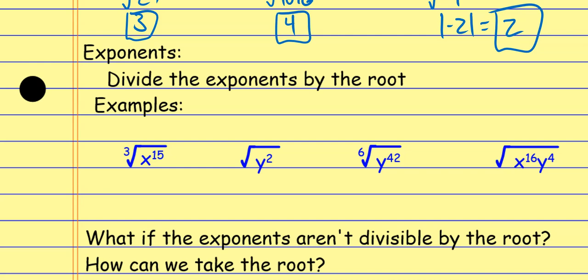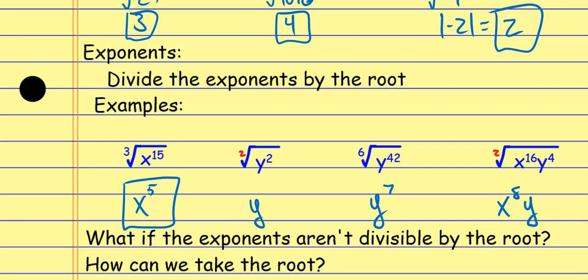So the cube root of x to the 15th power is just x to the 5th — I divide the exponents. For the square root, there's an implied little 2 on the outside. Dividing exponents: the square root of y-squared gives y to the 1st — I don't need to write the 1. The next one: dividing gives y to the 7th. And the last: x to the 8th and y to the 2nd.